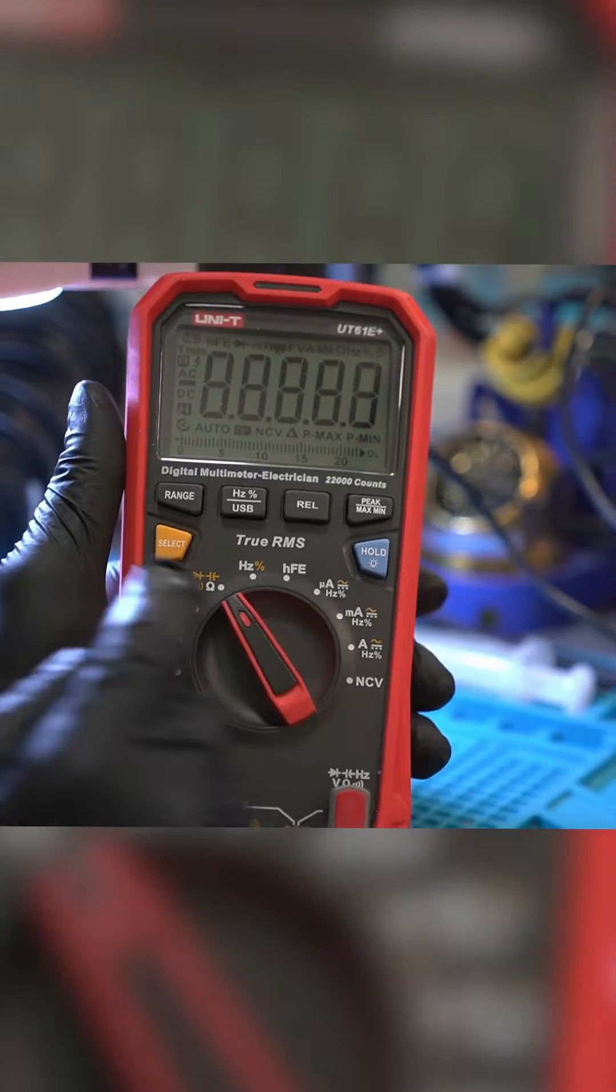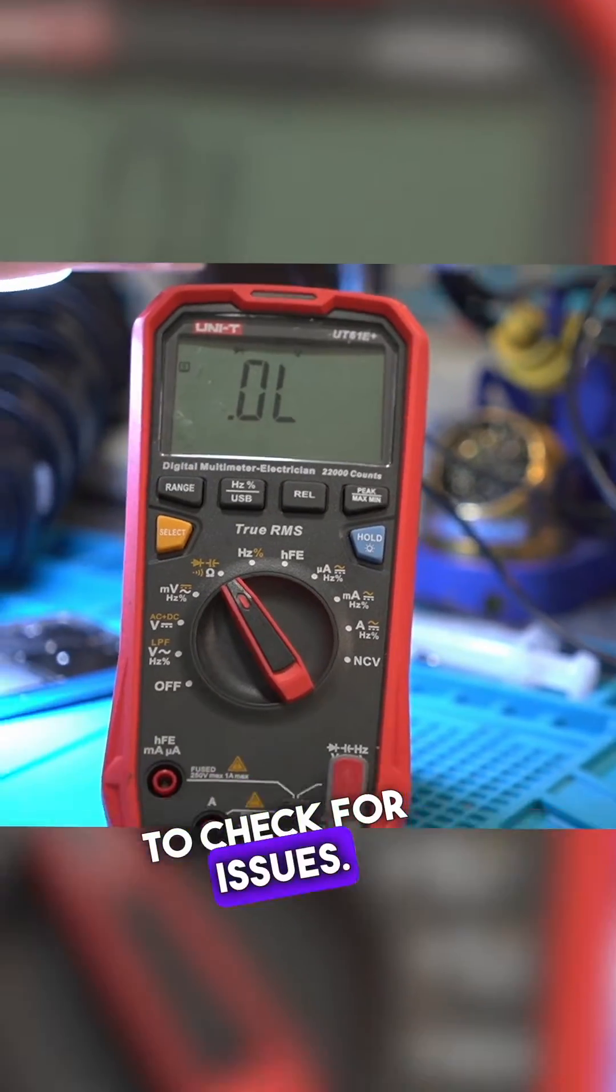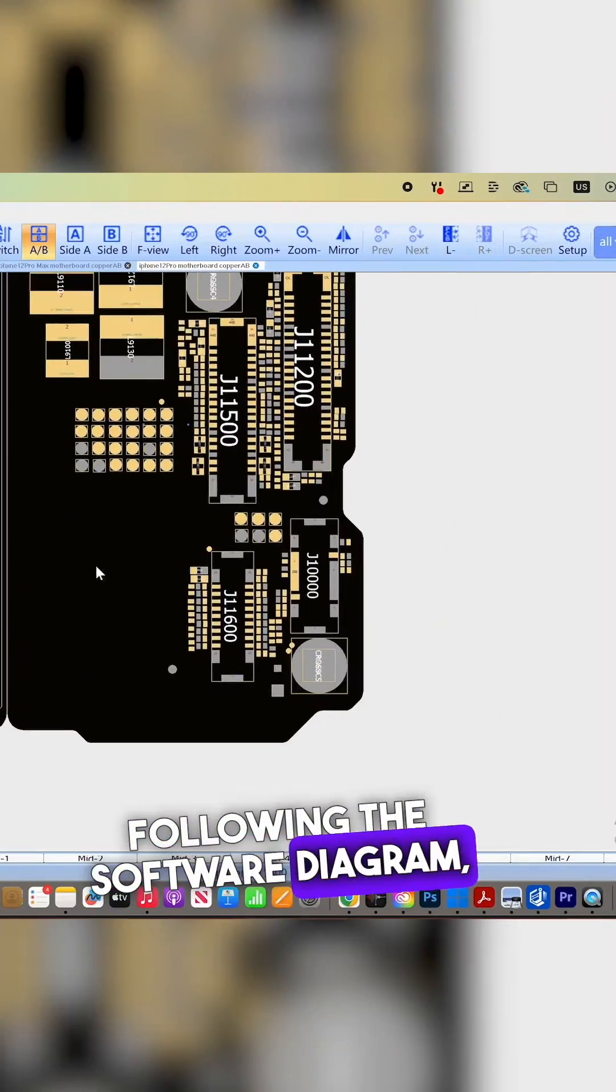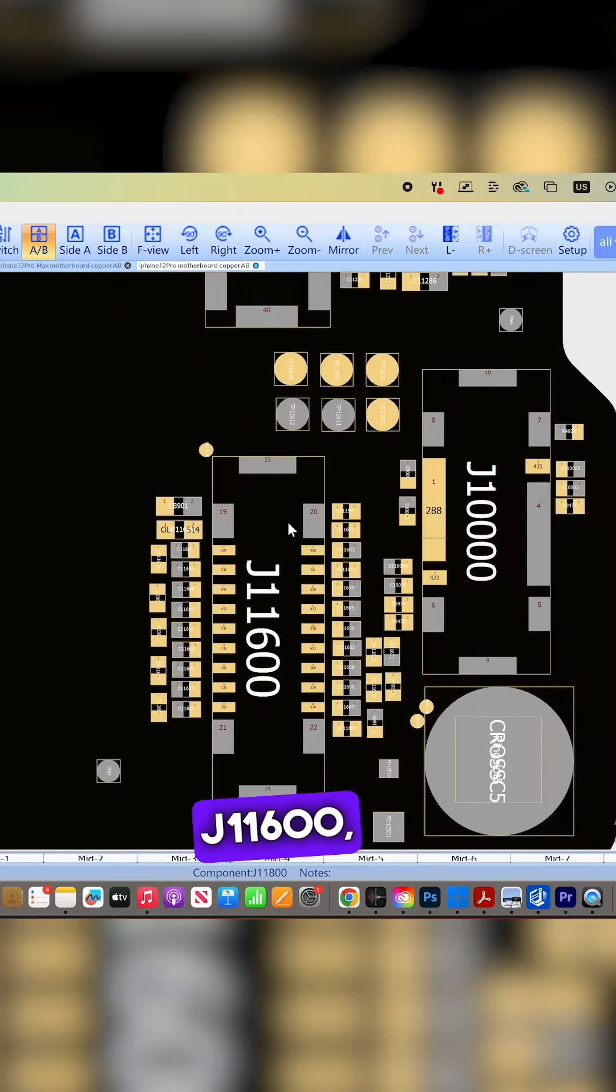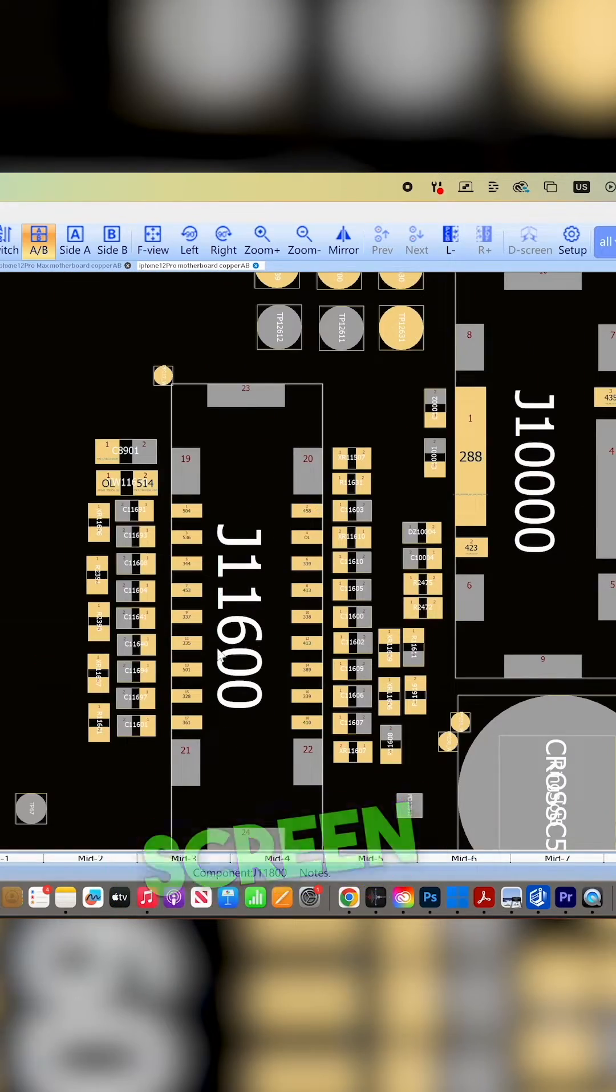Undeterred, we proceed carefully, using a multimeter to check for issues. Following the software diagram, we focus on connector J11600, also known as the touchscreen connector.